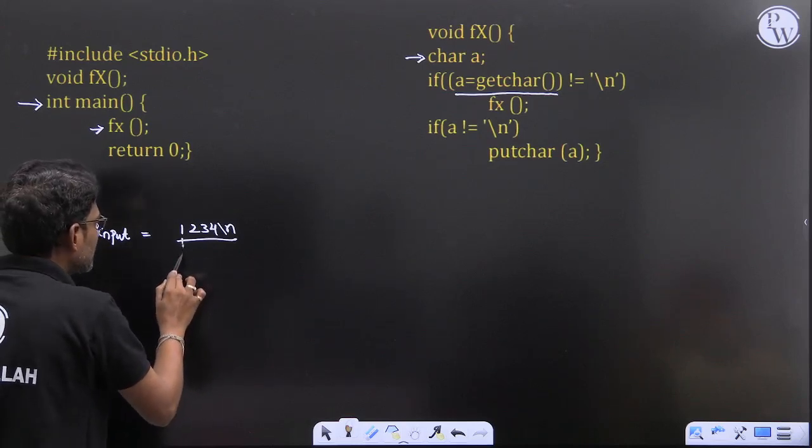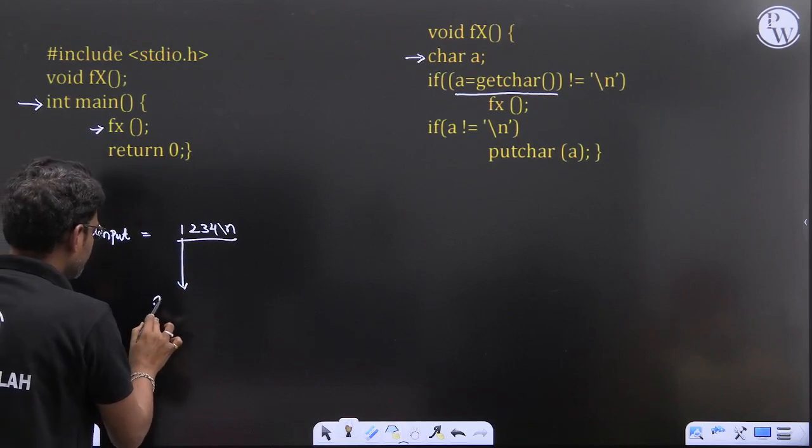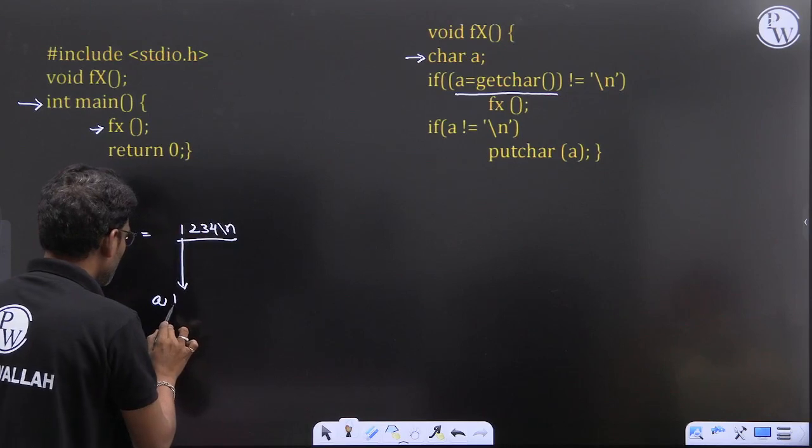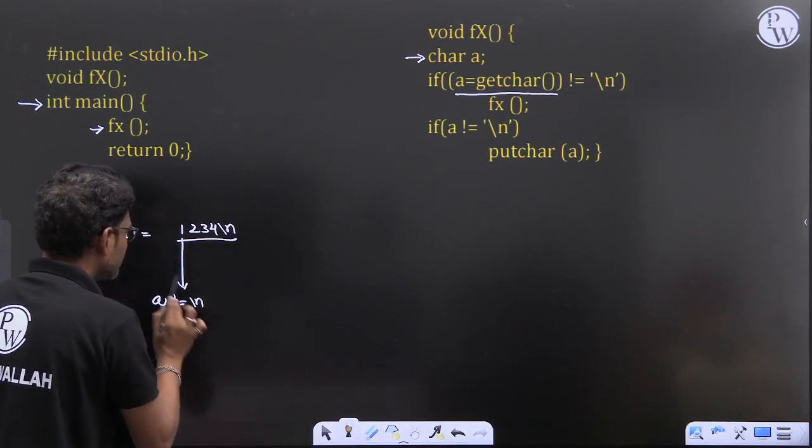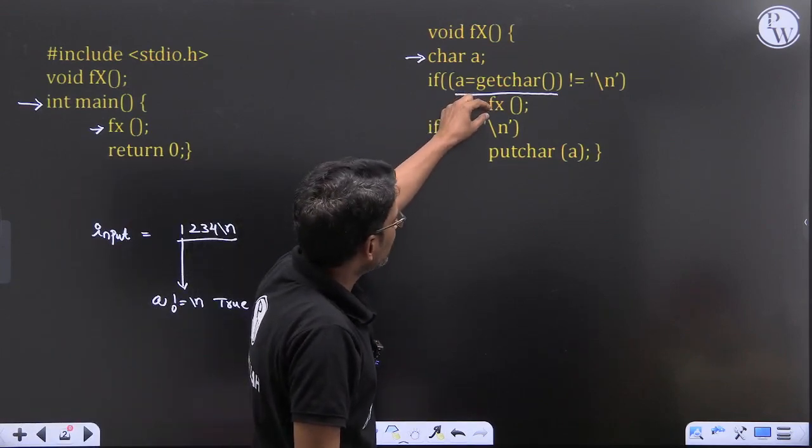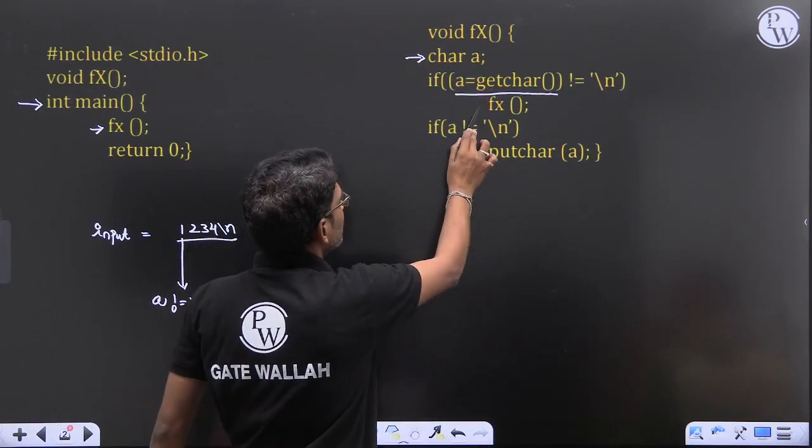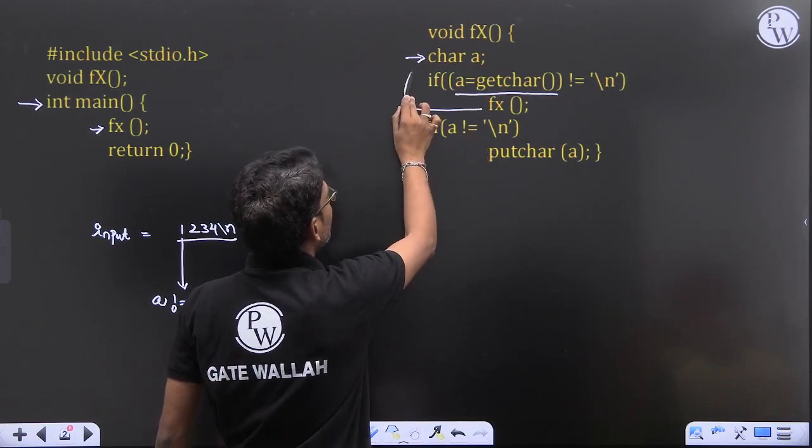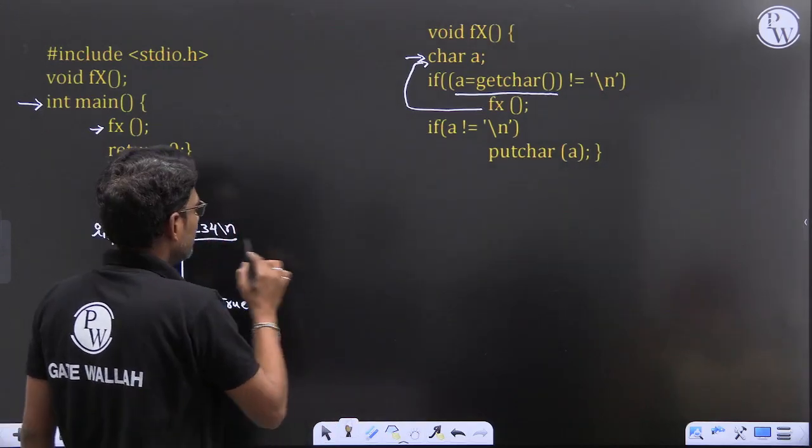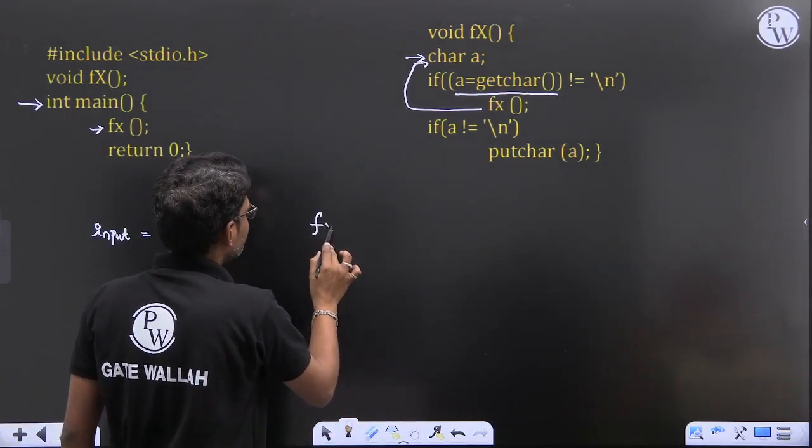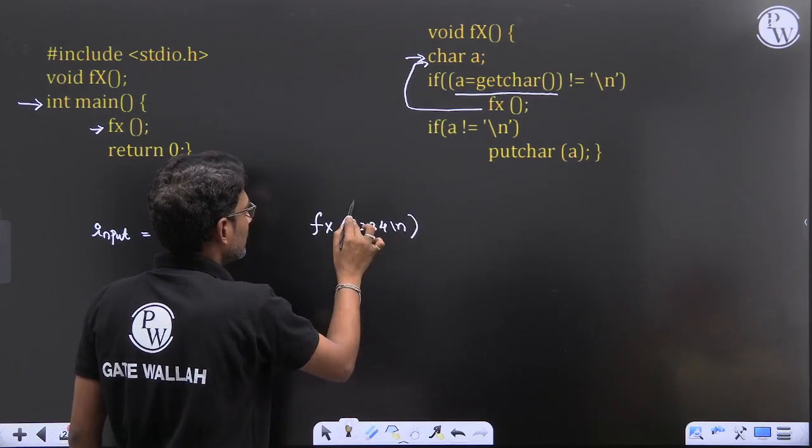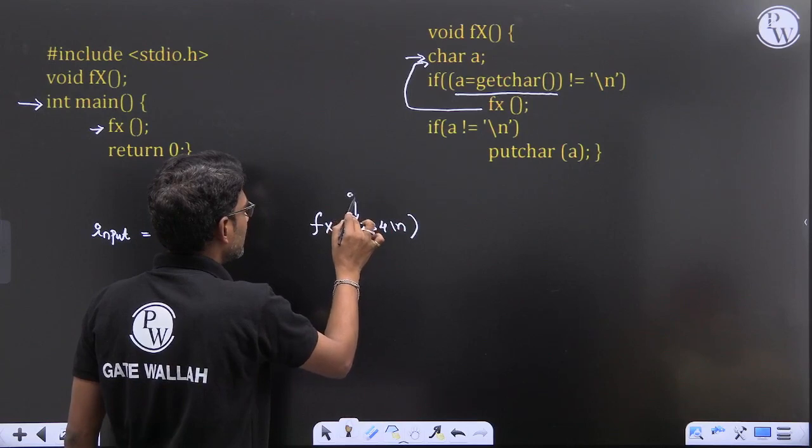Now first one will come into a, is a not equal to backslash n? True, and we are calling the recursive function again. That means whenever you are calling this FX with 1234 backslash n, where a is getting the character 1, we are recursively calling this function.